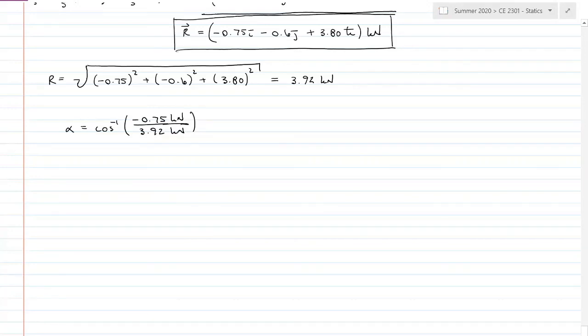The negative sign does matter here. Alpha equals 101 degrees. Beta equals the inverse cosine of negative 0.6 kilonewtons over 3.92 kilonewtons, giving me 98.8 degrees. Gamma equals the inverse cosine of 3.80 kilonewtons over 3.92 kilonewtons, giving me 14.2 degrees.